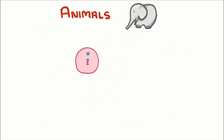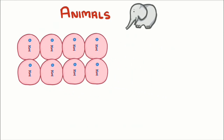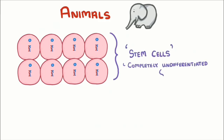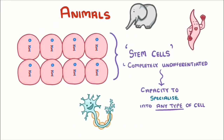The resulting cell divides into two, then into four, and so on, forming a group of identical cells. Cells such as these are called stem cells, as they are completely undifferentiated — they have the capacity to specialize into any type of cell, such as a nerve cell or a muscle cell. Stem cells taken from this stage in development are known as embryonic stem cells, and scientists can use them for all sorts of applications.